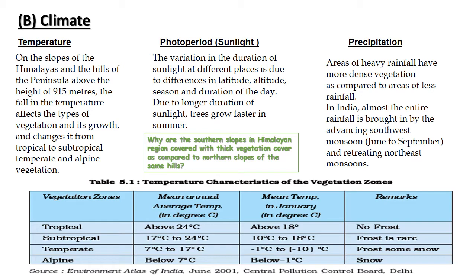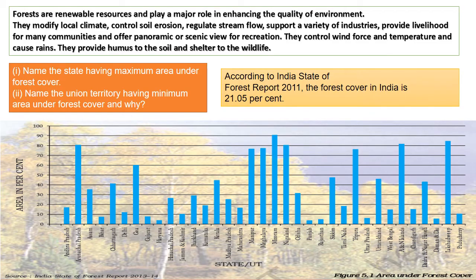Now we will discuss the usefulness of forests. Forests are renewable resources and play a major role in enhancing the quality of the environment. They modify local climate, control soil erosion, regulate stream flow, support a variety of industries, provide livelihood for many communities, and offer scenic views for recreation. They control wind force and temperature, cause rains, provide humus to the soil, and provide shelter to wildlife.